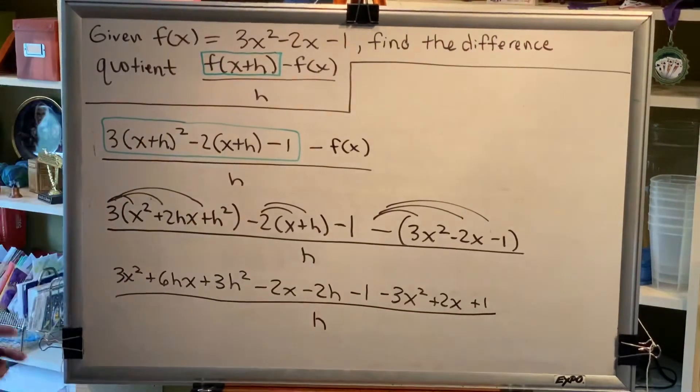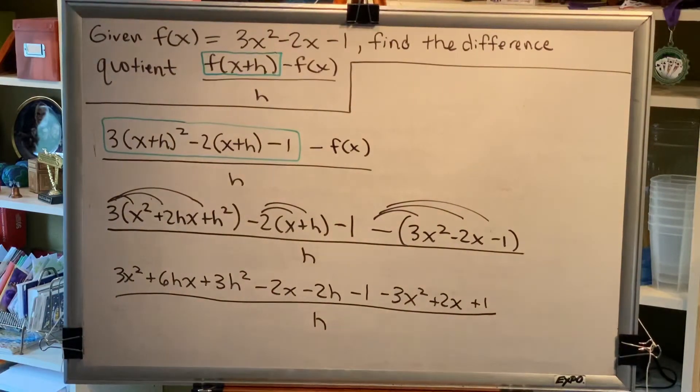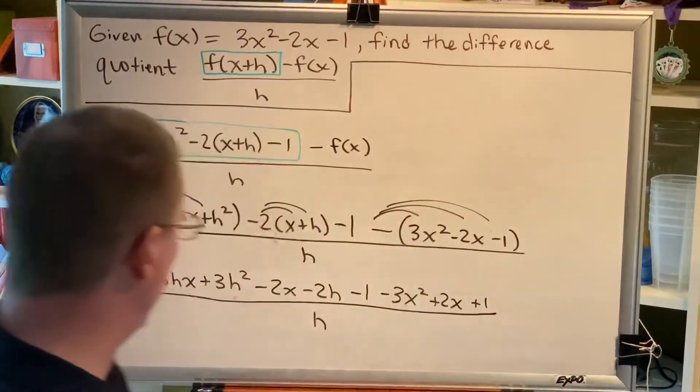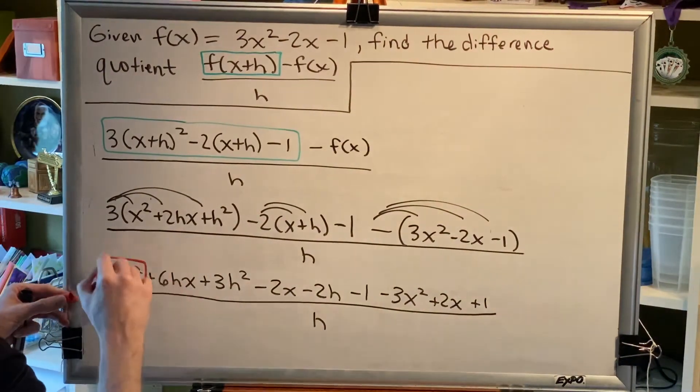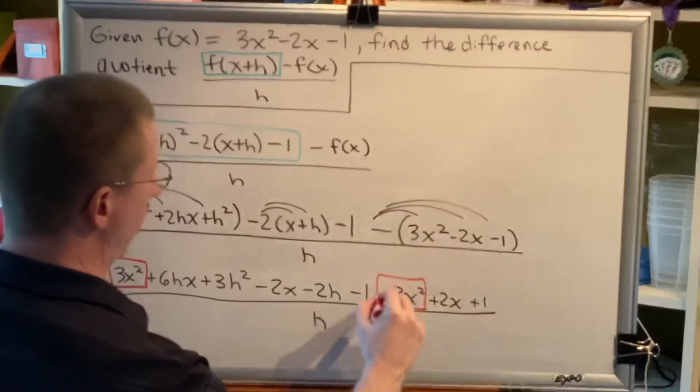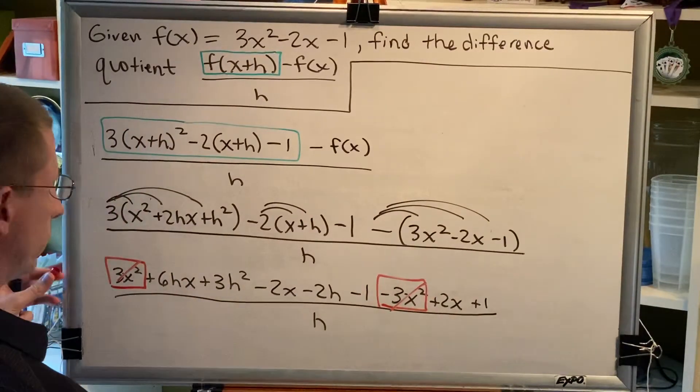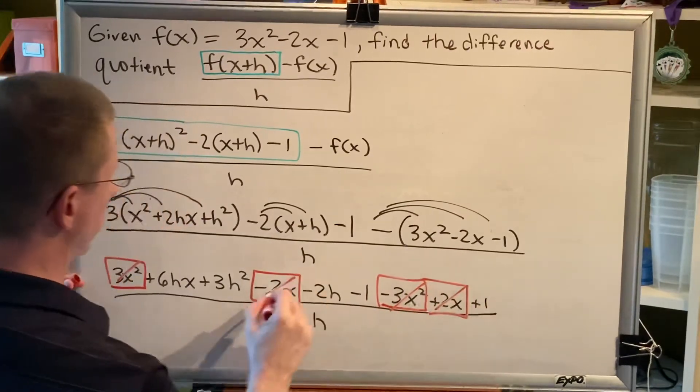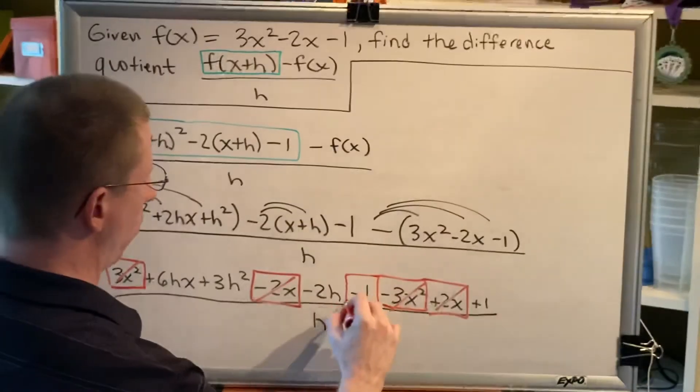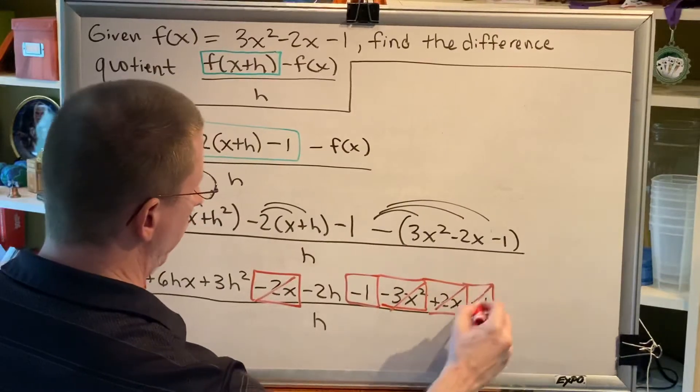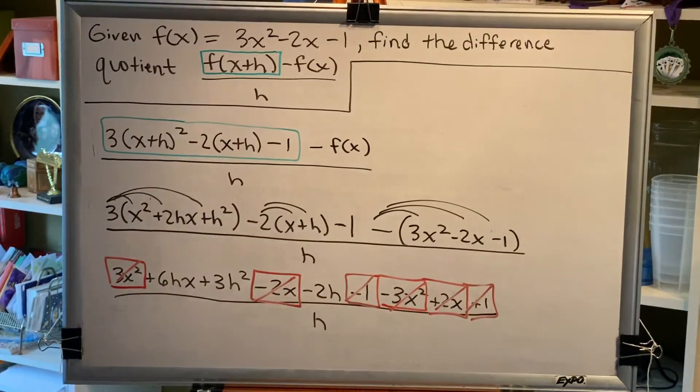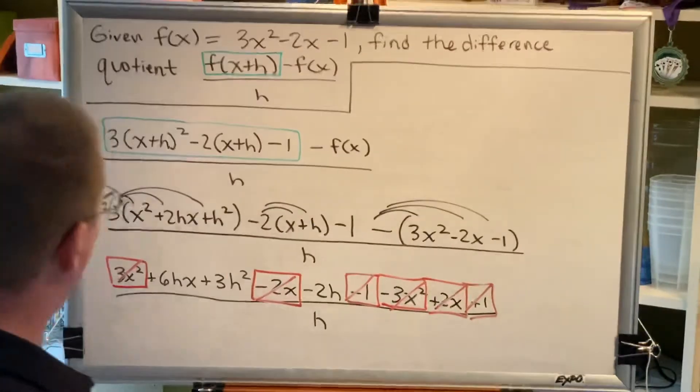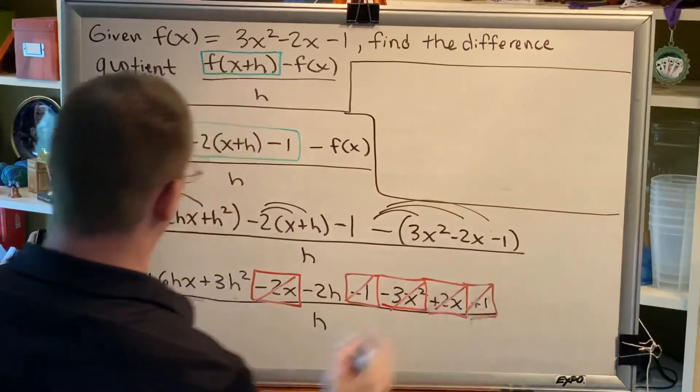Now, the interesting thing about finding a difference quotient is, once you get rid of all of your parentheses, usually there are a lot of terms that will cancel. For example, 3x squared minus 3x squared. Those cancel to 0. Subtract 2x, add 2x. Those cancel to 0. Subtract 1, add 1. Those cancel to 0. So a problem that looked a little bit intimidating is revealed to be not quite as bad.